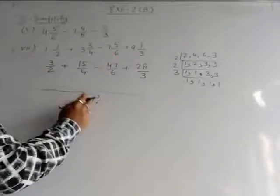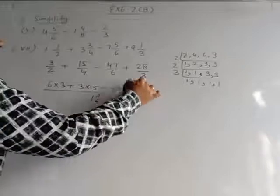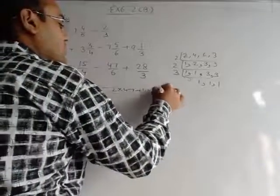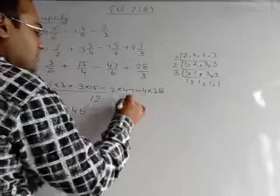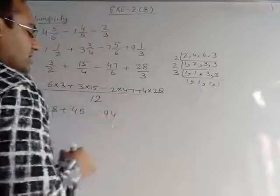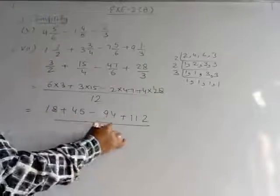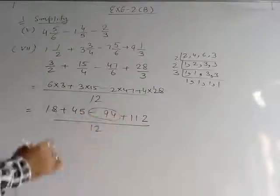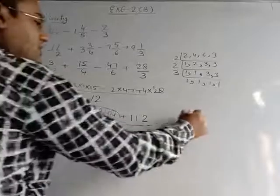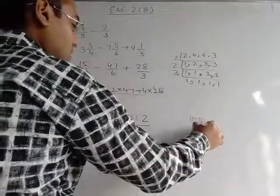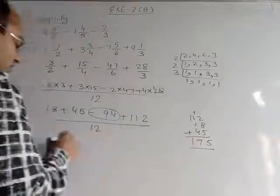So the common denominator is 12. For 2: 2×6=12, so multiply numerator 3 by 6 = 18. For 4: 4×3=12, so multiply numerator 15 by 3 = 45. For 6: 6×2=12, so multiply numerator 47 by 2 = 94. For 3: 3×4=12, so multiply numerator 28 by 4 = 112. Now we multiply: giving us 18/12, 45/12, 94/12, 112/12. Adding 18 + 45 + 112 = 175.